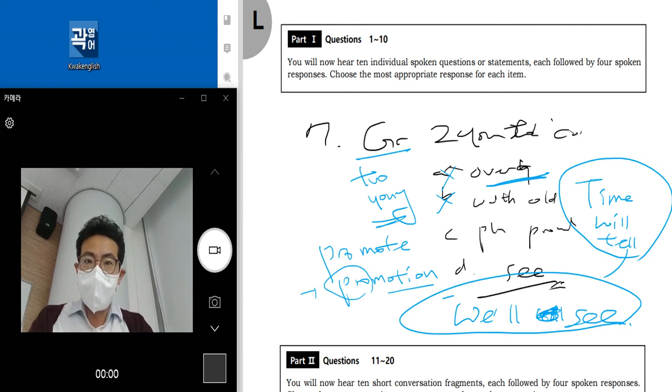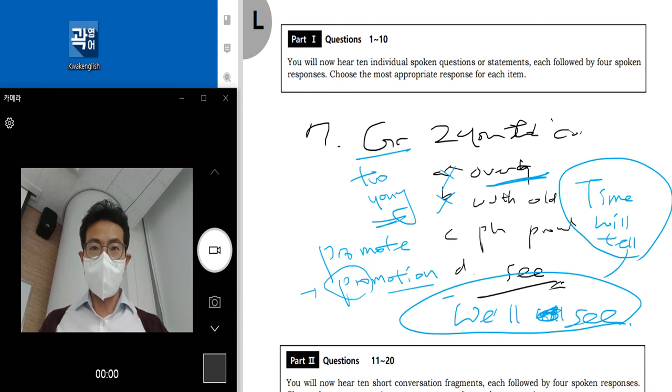되네요? OLC. 그래서 답은, D로 가면 되는 거예요. Alright? 자.